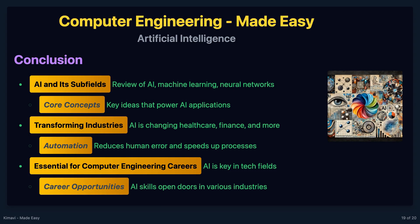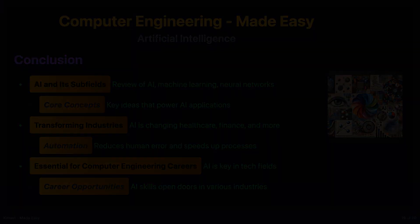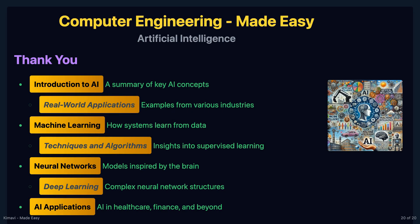In conclusion, AI and its subfields like machine learning and neural networks are transforming various industries by enabling machines to perform tasks that require human intelligence. Understanding these concepts is essential for anyone pursuing a career in computer engineering. Thank you for watching this chapter on artificial intelligence. We hope you found it informative and engaging.